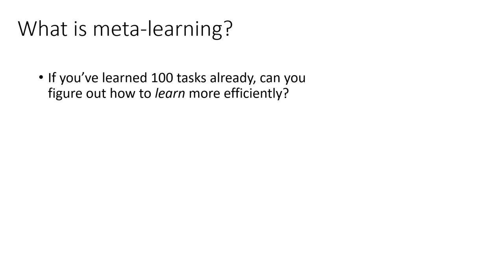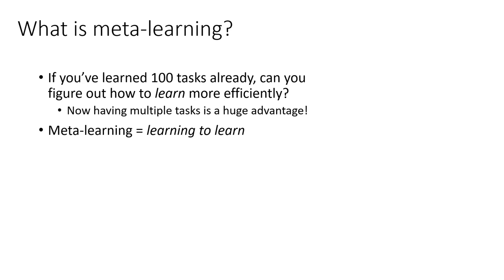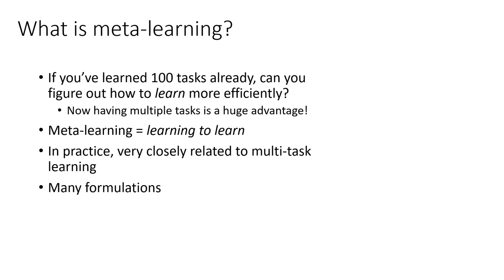So what is meta-learning? If you've learned 100 tasks already, can you figure out how to learn new tasks more effectively? In this case, having multiple tasks becomes a huge advantage, because if you can generalize the learning process itself from multiple tasks, then you can drastically accelerate acquisition of a new task. Meta-learning essentially amounts to learning to learn. In practice, it's very closely related to multi-task learning.